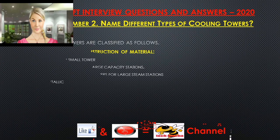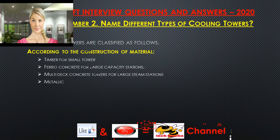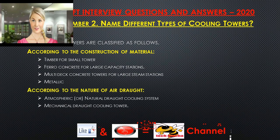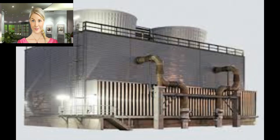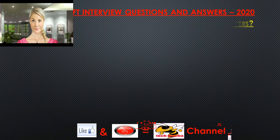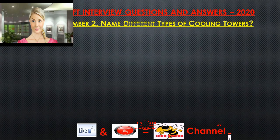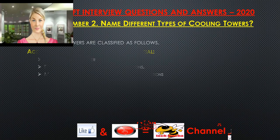Question 2: Name different types of cooling towers. Cooling towers are classified as follows — according to construction material: timber for small towers, ferro-concrete for large capacity stations, multi-deck concrete towers for large steam stations, and metallic. According to the nature of air draft: atmospheric or natural draft cooling systems, and mechanical draft cooling towers.